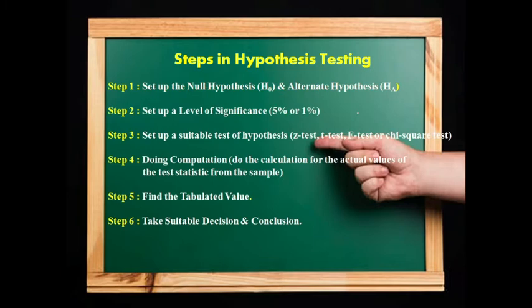Step 1 is to set up the null hypothesis and alternate hypothesis. In Step 1, we first state the null hypothesis, which is represented by H0, and the alternate hypothesis, which is represented by H1.